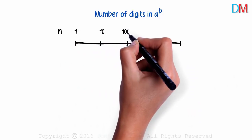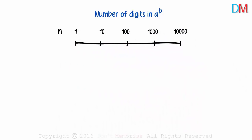Can we use logarithms to find the number of digits in A to the power B? Say the number is N. Let's represent the possible values of N using a scale.